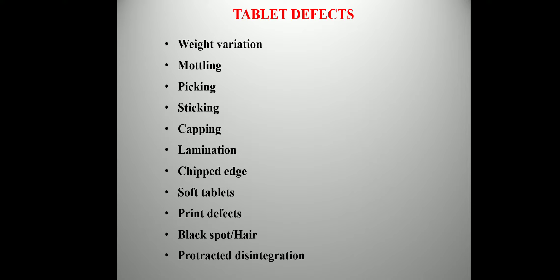Various types of tablet defects can be listed as: weight variation, mottling, peaking, sticking, capping, lamination, chipped edges, soft tablets, print defects, black spots or hairs, and prolonged disintegration. In the following sections we will discuss each one of these defects in detail.